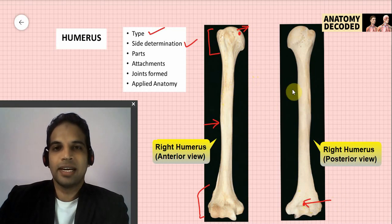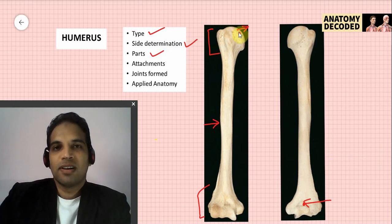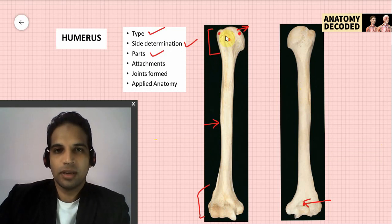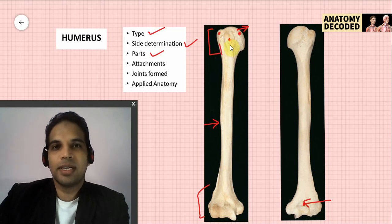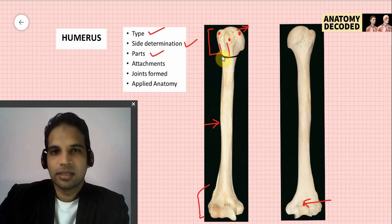In the upper end of the humerus: the lesser tubercle and the greater tubercle are present, with the inter-tubercular sulcus (also called bicipital groove) between them — the tendon of the long head of biceps passes through it. The bicipital groove has a lateral lip, medial lip, and floor. There is also the surgical neck separating the upper end from the shaft, and the anatomical neck separating the head from the rest.